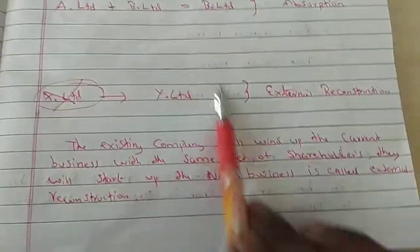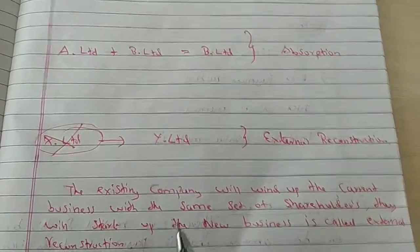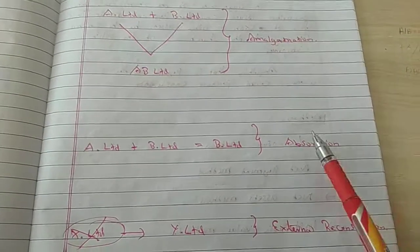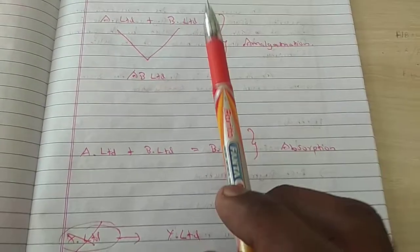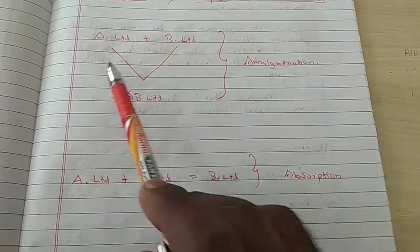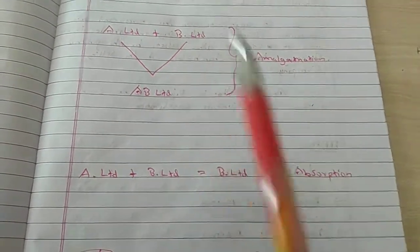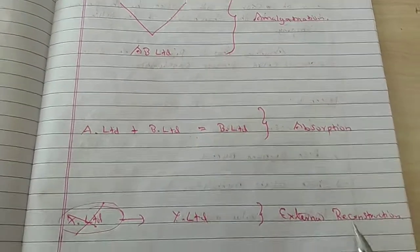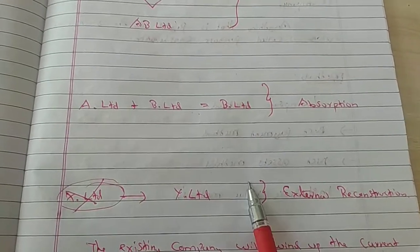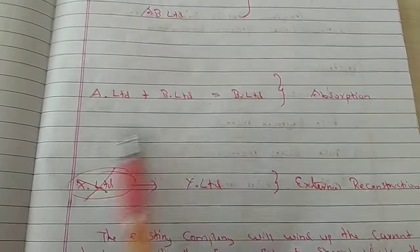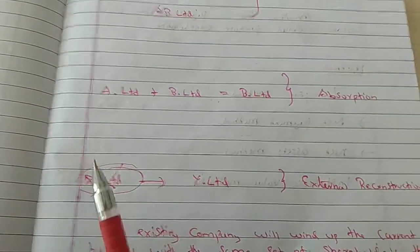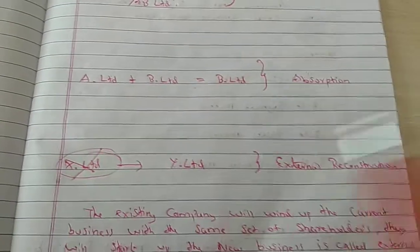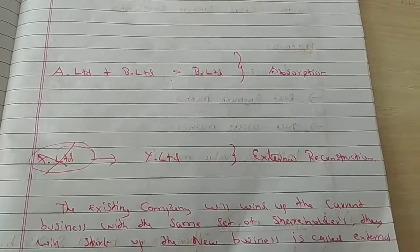So, three cases: Amalgamation, Absorption, and External Reconstruction. I repeat: Amalgamation means two companies are joined together to form one new company. Absorption means two companies exist and one company is absorbed into the other. External Reconstruction means one company winds up its business, and the same shareholders start a new company. Very simple.